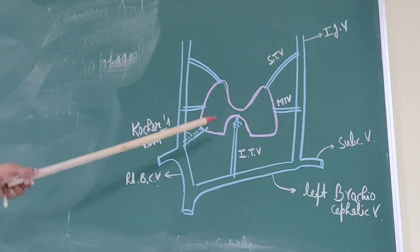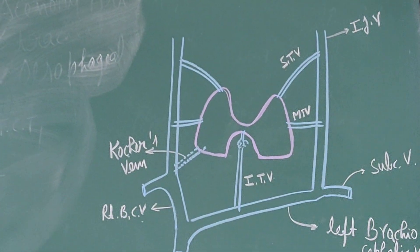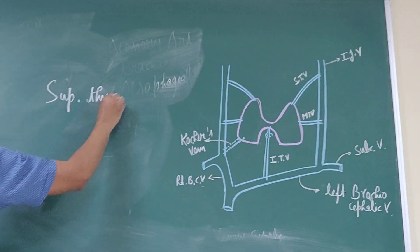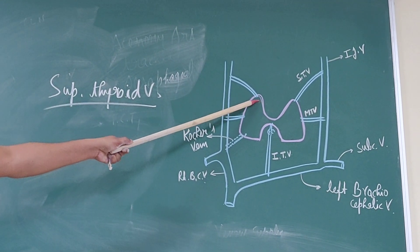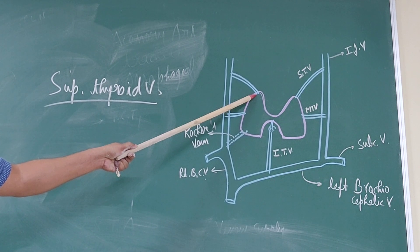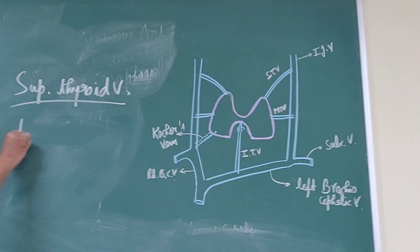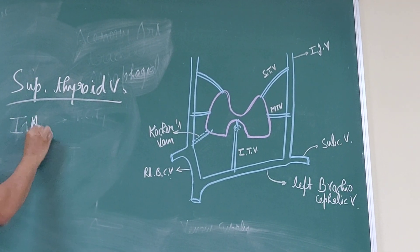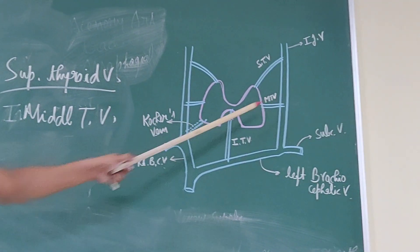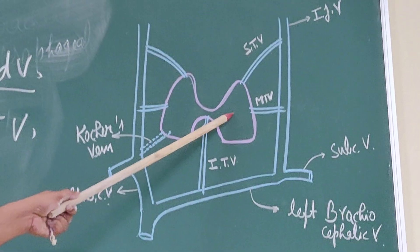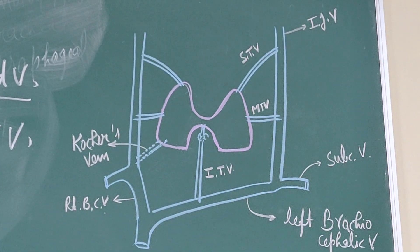The thyroid gland is drained by three veins. The superior thyroid vein emerges from the apex of the thyroid gland and drains into the internal jugular vein. The middle thyroid vein emerges from the middle of the lateral lobe of the thyroid gland and also drains into the internal jugular vein.